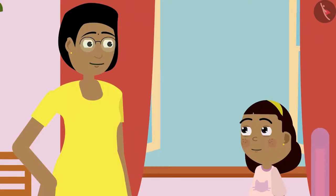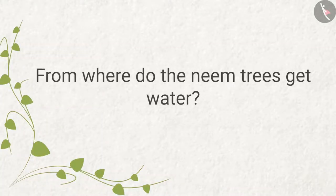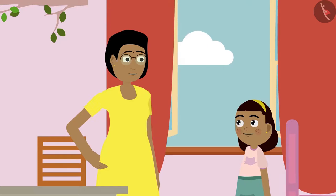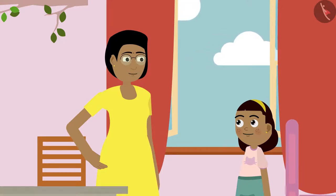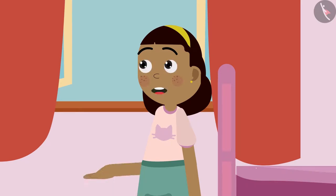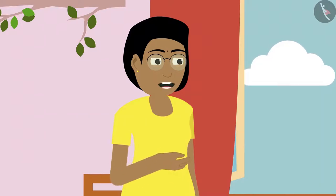Zia says: But mummy, I have never seen you watering the neem tree, so from where does it get water? Can you tell from where neem trees get water? Mother explains: Zia, neem trees do not require much water. The rain water they get from time to time is enough for them. Zia replies: Oh wow! Then it's easy to take care of them. Mother agrees: Hmm, you are right.